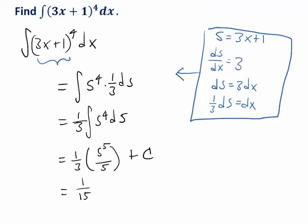And instead of s to the 5th, I want to rewrite things back in terms of my original variable. So instead of s, I have 3x plus 1, and that's raised to the 5th. And this is my general antiderivative.